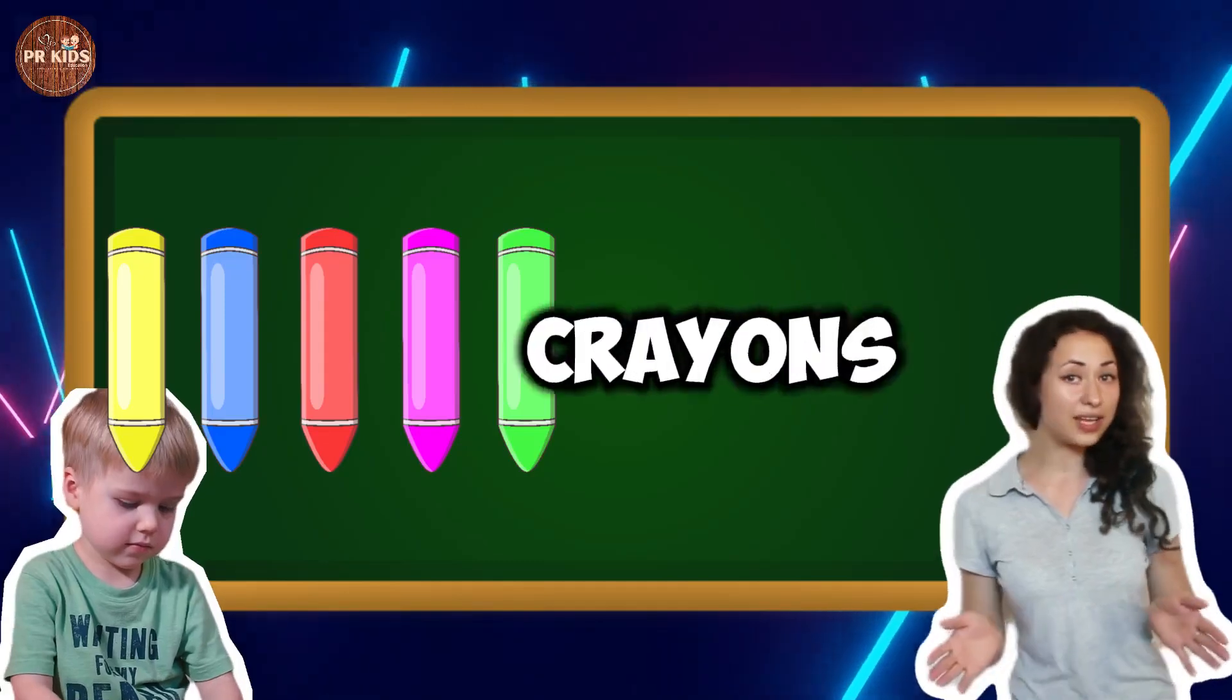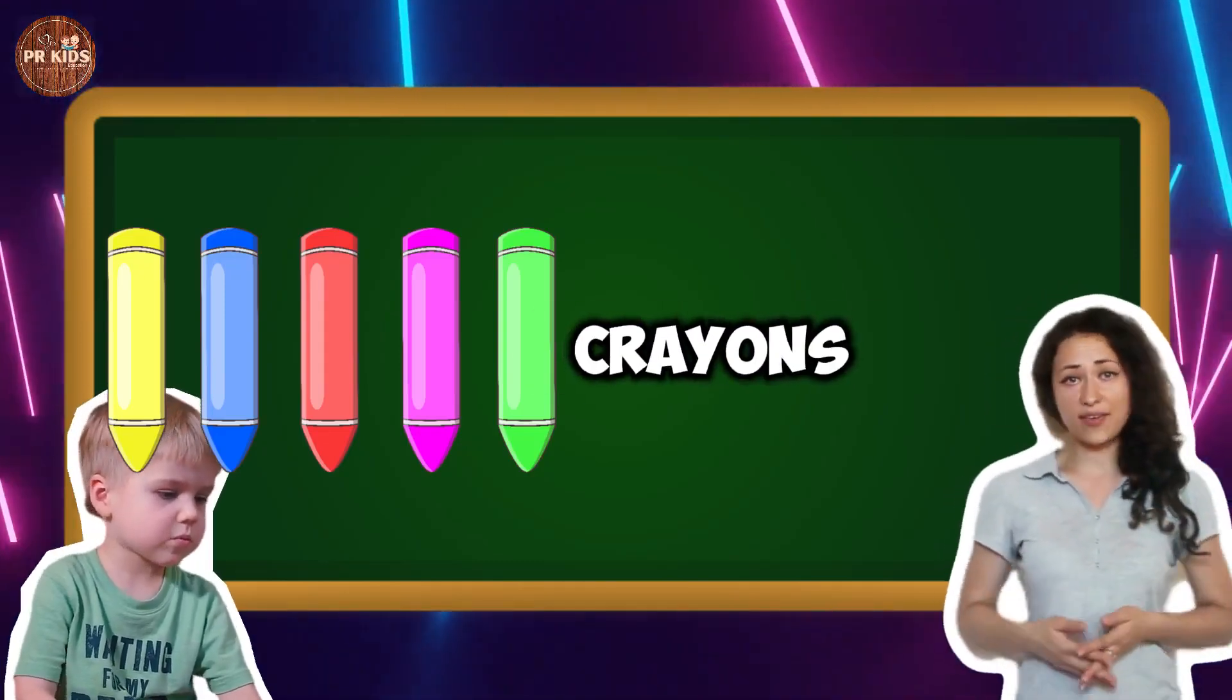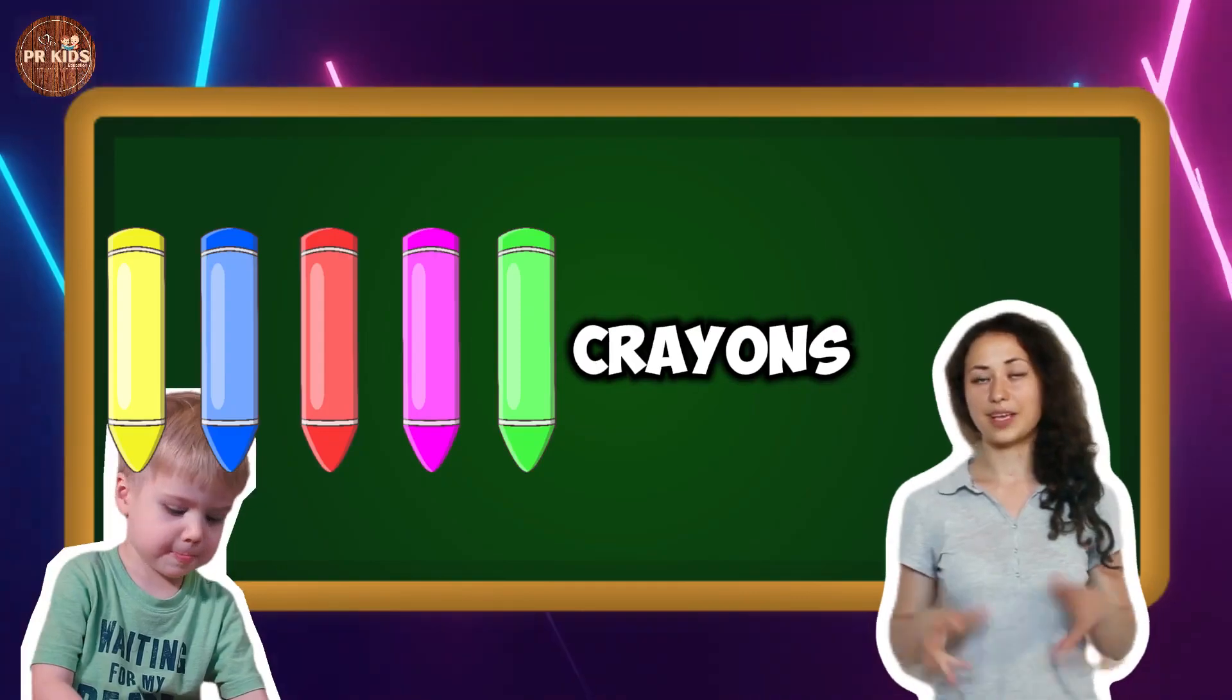Five crayons minus three crayons makes two crayons. One, two, two crayons left.